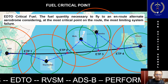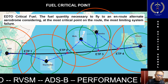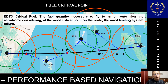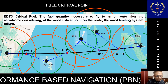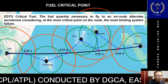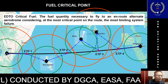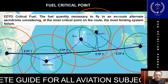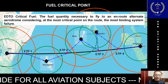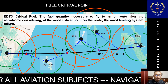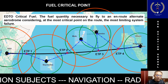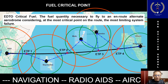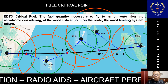The fuel required to divert from that particular equitime point to the suitable alternate is known as the critical fuel. In this particular route, the critical fuel will be the fuel required to fly from Nairobi to equitime point 4, which is the farthest point from Nairobi, and to proceed to either Colombo or Singapore under the degraded condition — that is engine failure, pressurization failure, or a combination of both.